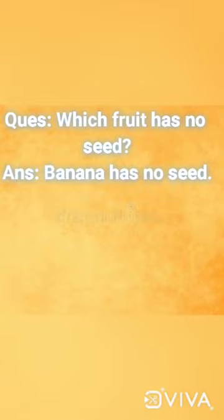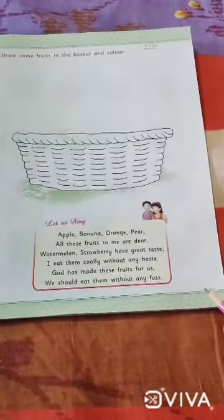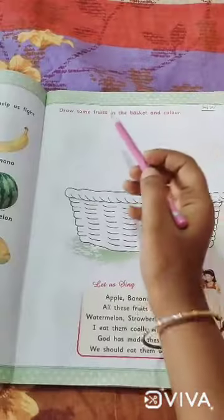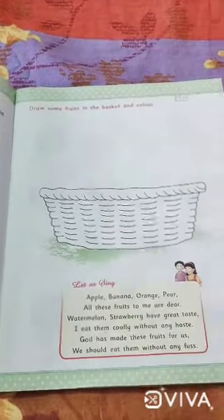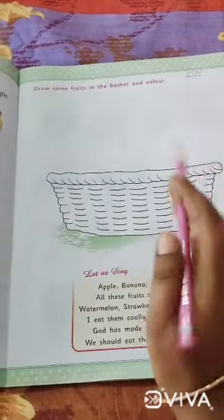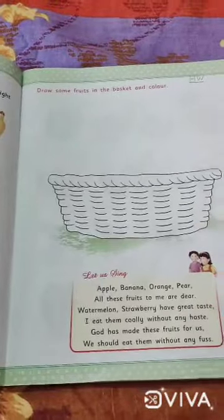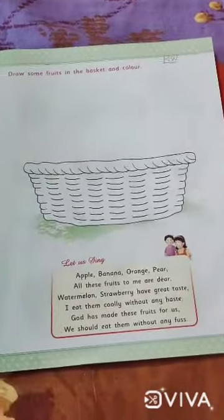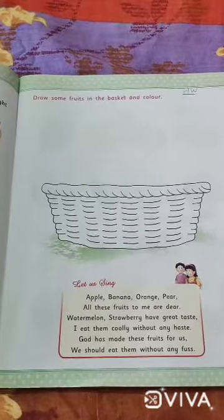So these are the questions which you have to learn. Now children, take out your book — My Little World — and go to page number 11. It is written: draw some fruits in the basket and color them. This is the basket and you have to draw some fruits here and color them. This is your homework — page number 11. Alright children, bye bye.